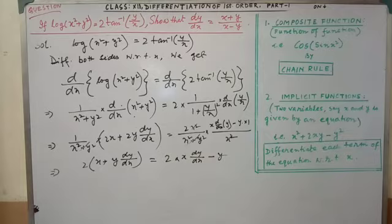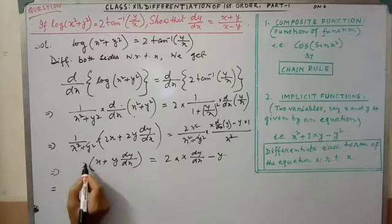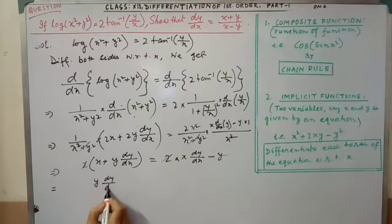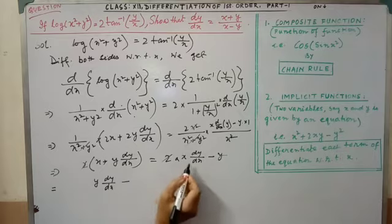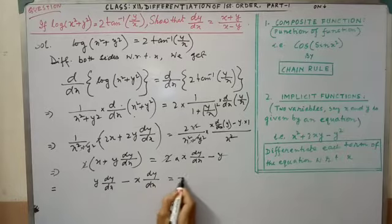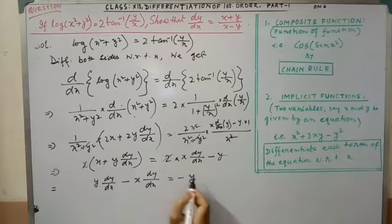After this, I think you are feeling comfortable. Now, see, 2 and 2 will be cancelled. So, after transposition, see y dy dx. This will come, coming from right to left. So, x dy dx equal to minus y. This is minus x.